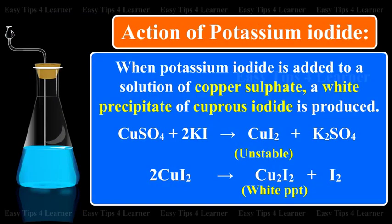Action of potassium iodide: When potassium iodide is added to a solution of copper sulfate, a white precipitate of cuprous iodide is produced. Copper sulfate plus potassium iodide gives cupric iodide plus potassium sulfate. Cupric iodide, being unstable, decomposes to give cuprous iodide, which is a white precipitate, and iodine.